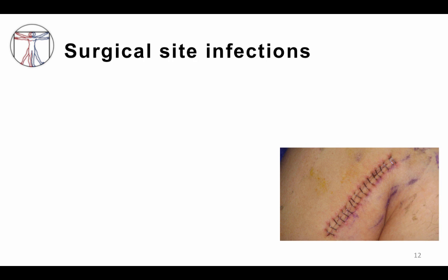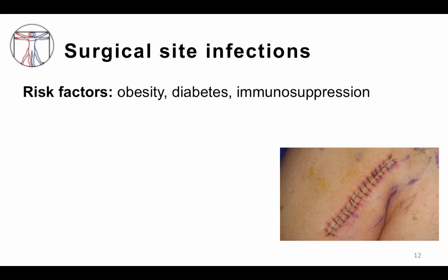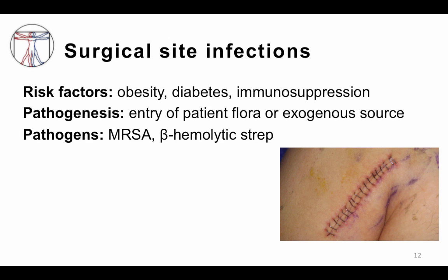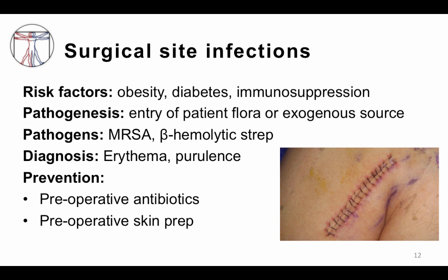Surgical site infections: patients who are obese, diabetic, or immunosuppressed are more likely to develop infection, partly due to poor wound healing. Usually there is bacteria on the patient, but sometimes it can come from other places that make it through the wound to cause infection. Common pathogens are Staphylococcus aureus and beta-hemolytic streptococci like Streptococcus pyogenes, though in the hospital the Staphylococcus aureus tends to be the methicillin-resistant form, MRSA. Diagnosis is clinical — erythema and purulent drainage. Prevention involves perioperative antibiotics at the time of surgery and extensive cleaning of the skin.